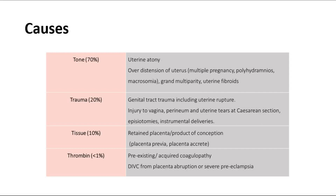Tissue causes could be due to retained placenta or products of conception. Thrombin is rare, accounting for less than 1% of cases, and is due to pre-existing or acquired coagulopathy. It can be due to disseminated intravascular coagulation from placental abruption or severe pre-eclampsia cases.